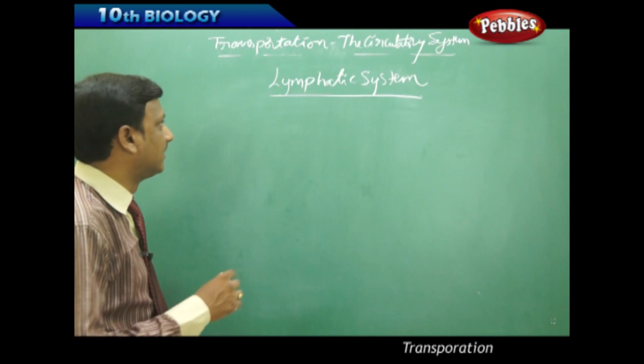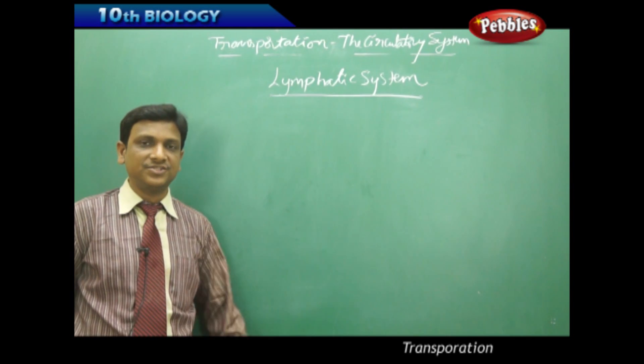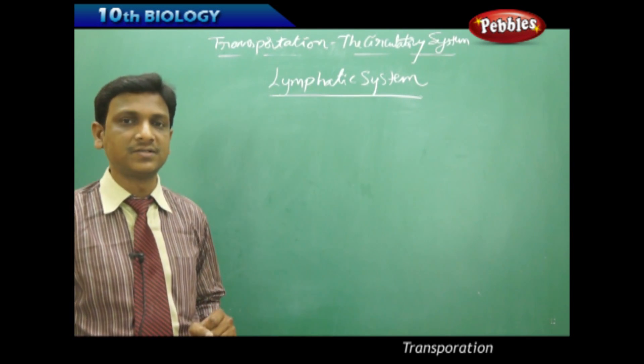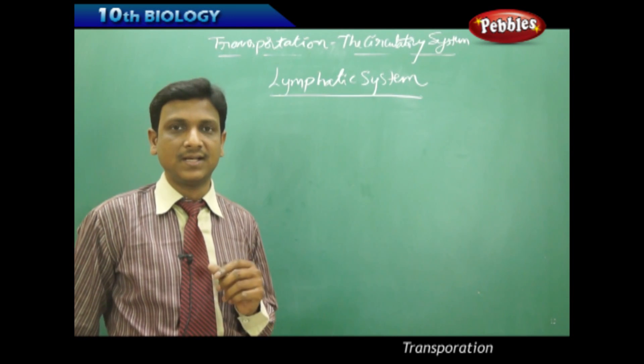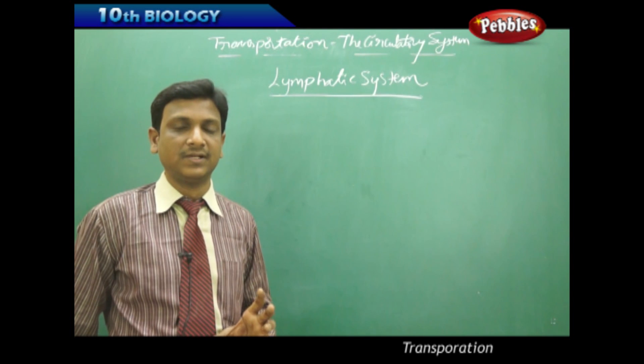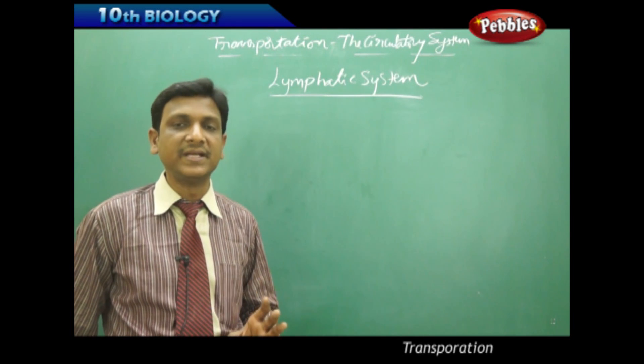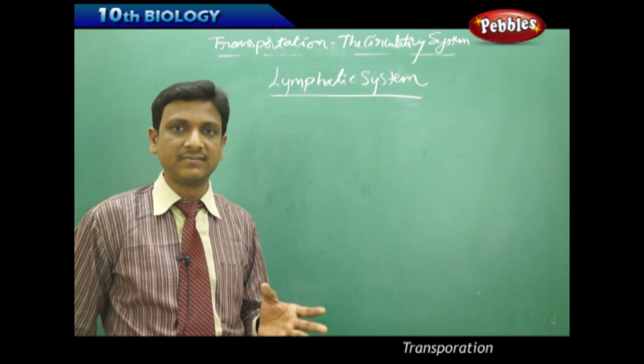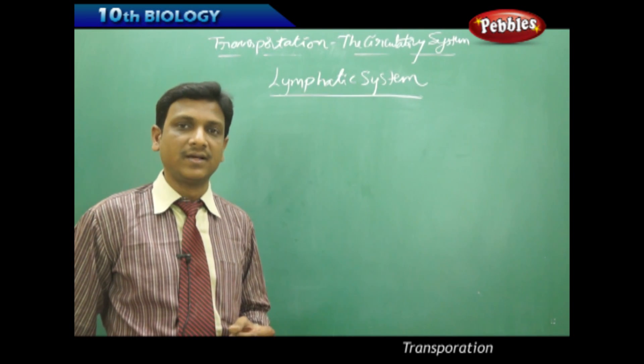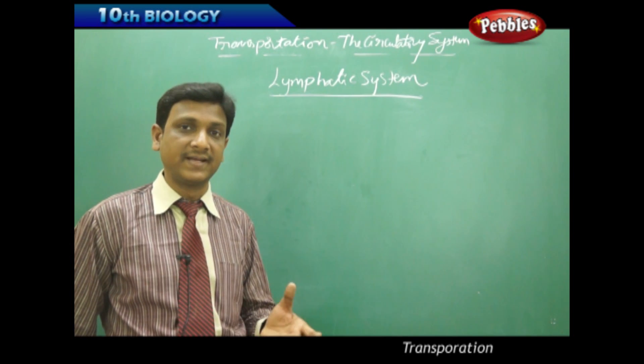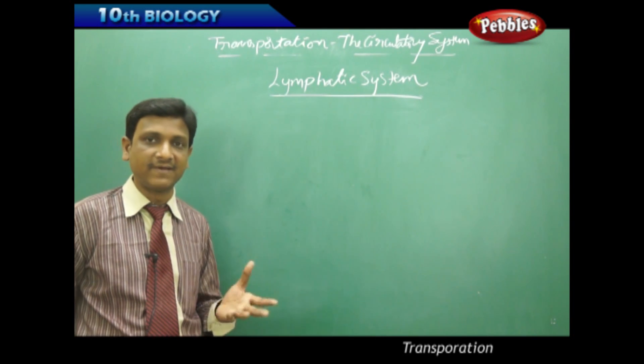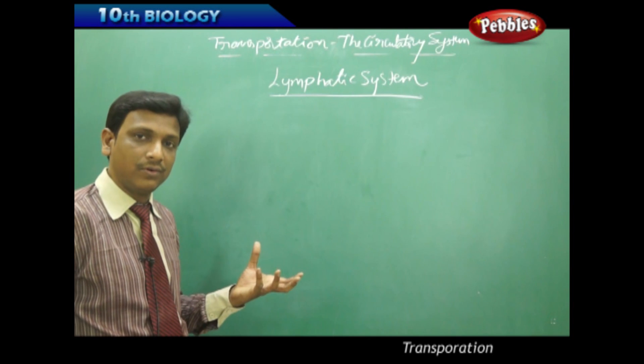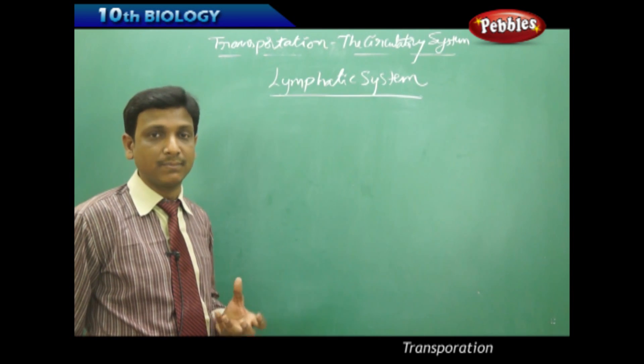Now, let us look at the lymphatic system. Generally, when we are studying about circulatory system, we mainly focus on the blood, heart, and blood vessels. Because it is an active system which actively transports various materials of various states. Either gases like oxygen carbon dioxide, either liquids, either solids like nutrients, carbohydrate, amino acid, protein, fat, everything. Blood is the main system we consider.